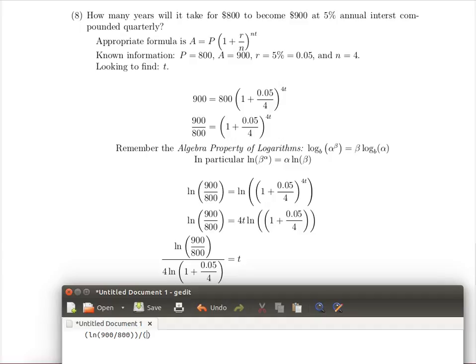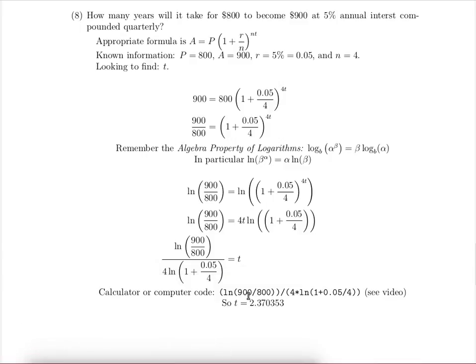The part that's in the denominator is going to be 4 times the natural log of something. That what we're taking the natural log of is 1 plus 0.05 divided by 4. So there's the code. My calculator calculated that value to be 2.37 and so on.